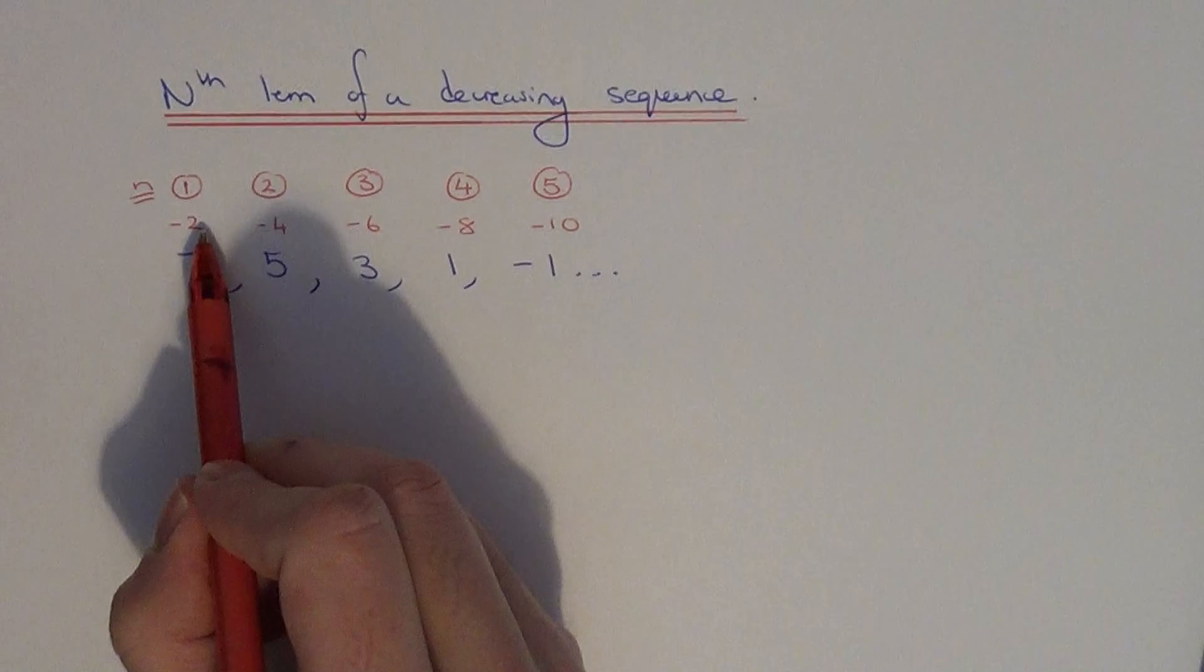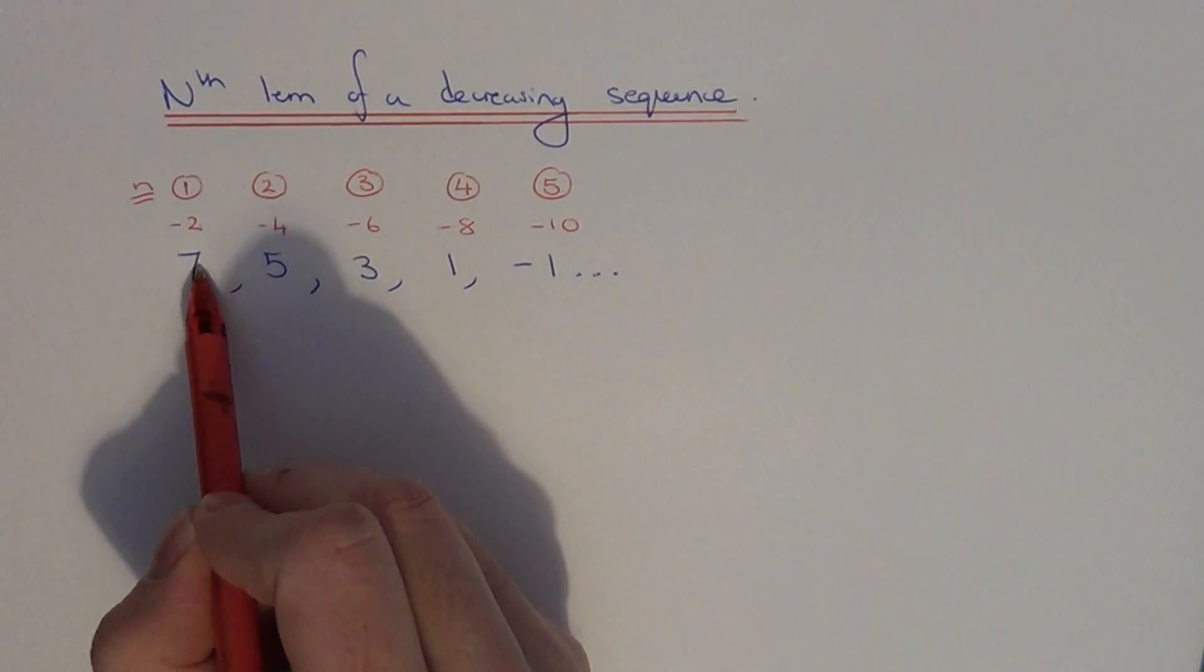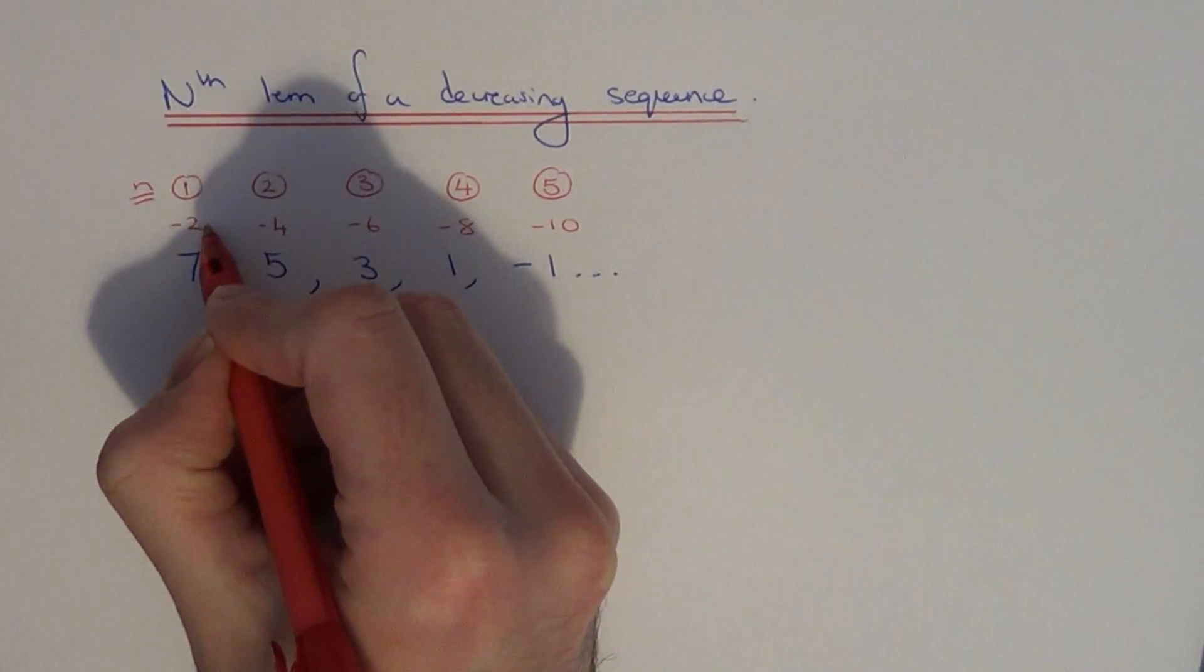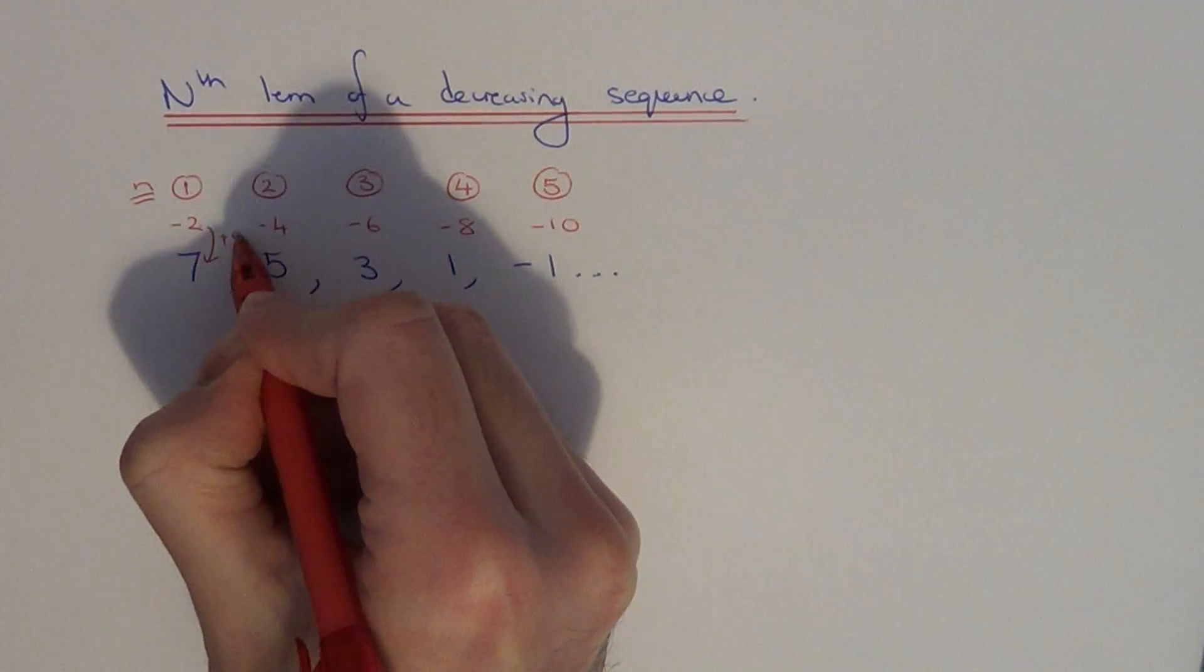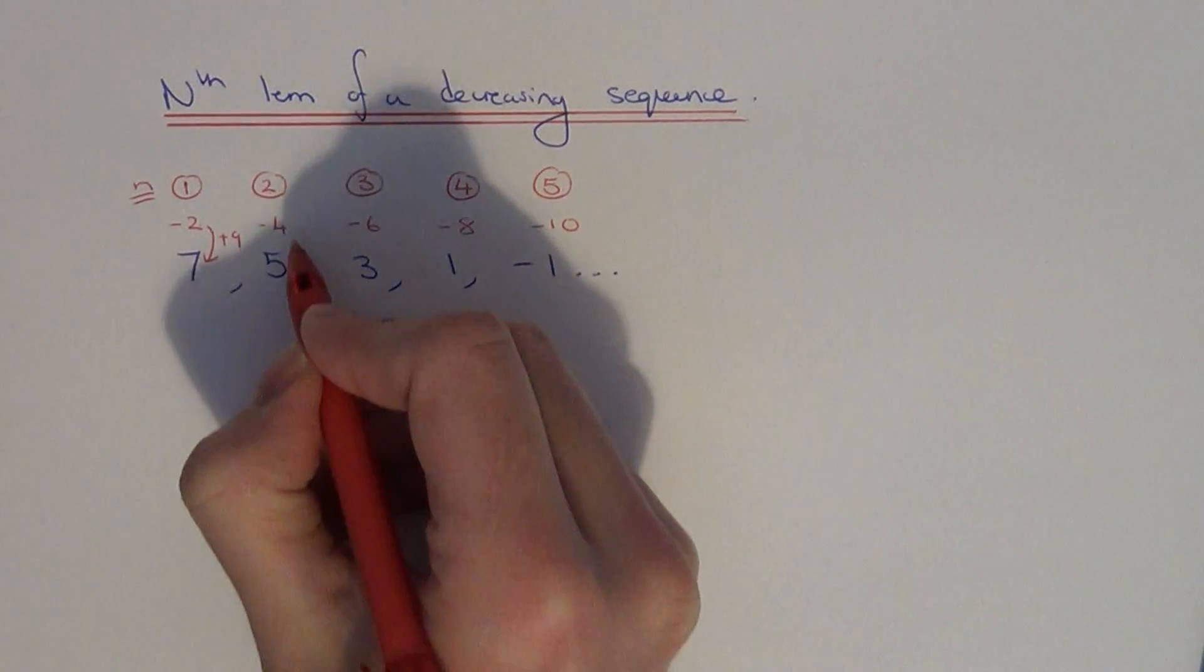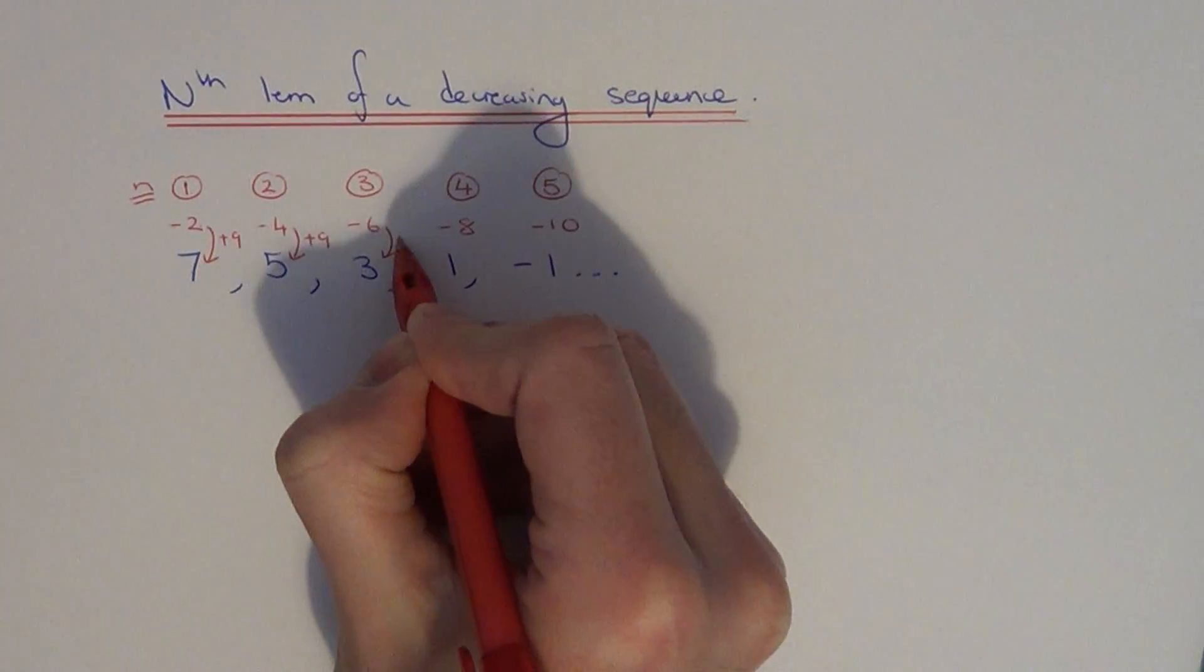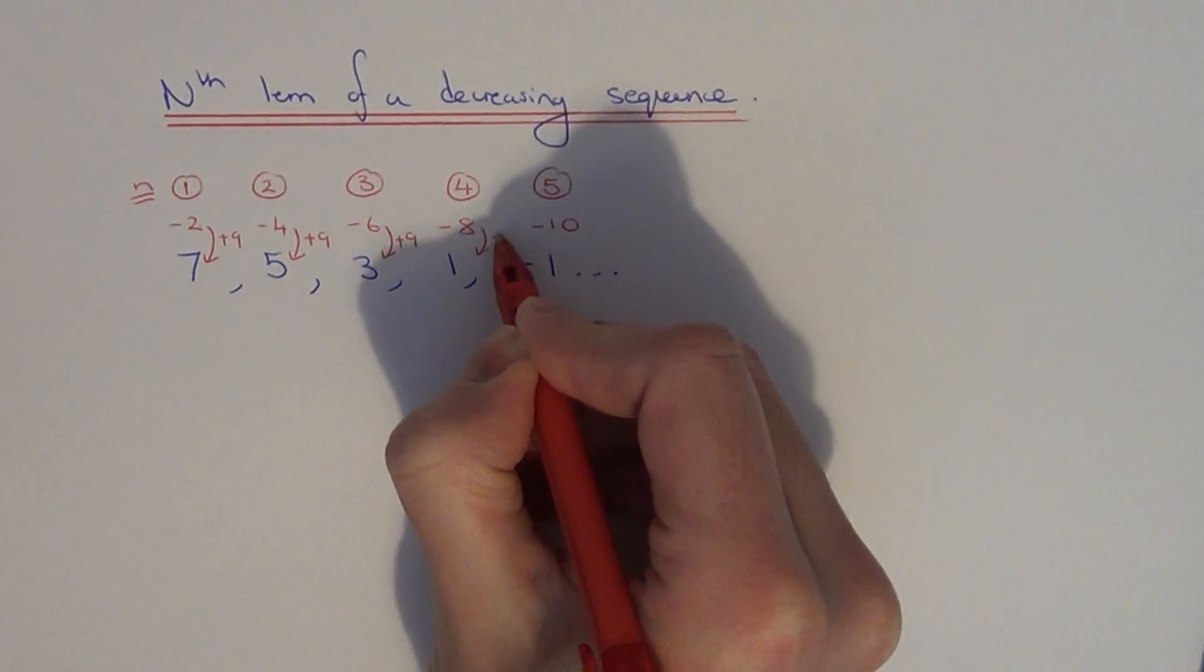Now all we need to do is figure out how we get from these minus 2 times tables to the numbers in the sequence. As you can see, if we add 9 to minus 2, it gives us plus 7. And this works for each of the other terms in the sequence.